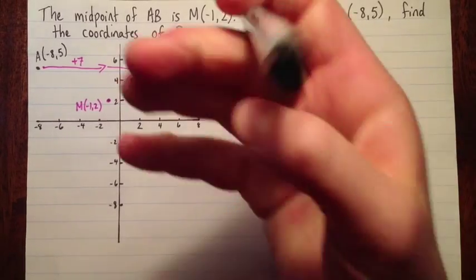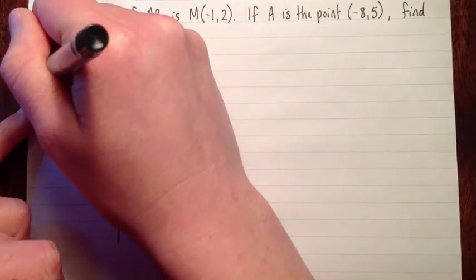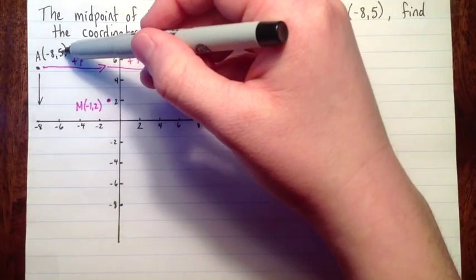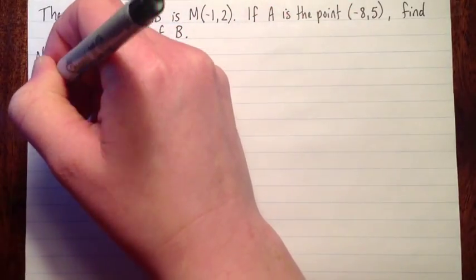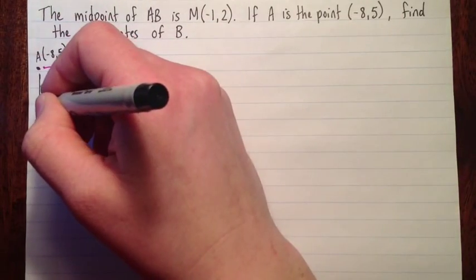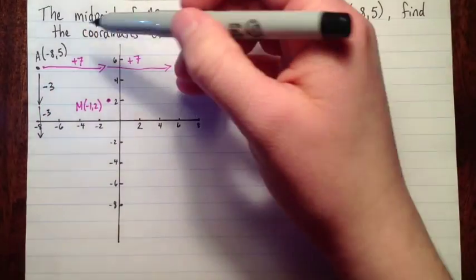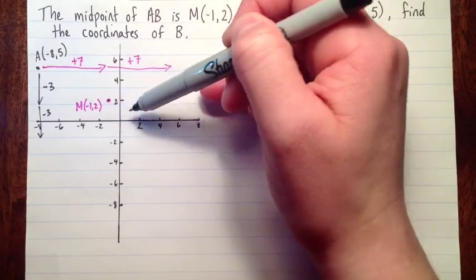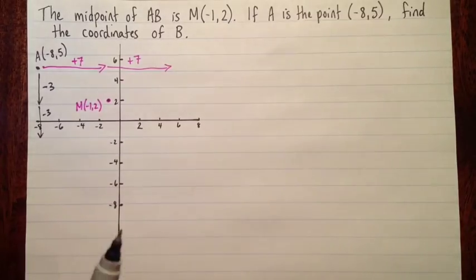So for the y values, what did we do to get from 5 to 2? We went down 3. We subtracted 3. So I'm going to do that again. Subtract another 3. So from 5 minus 3 is 2, and 2 minus 3 is negative 1. So this is going to put our endpoint here.